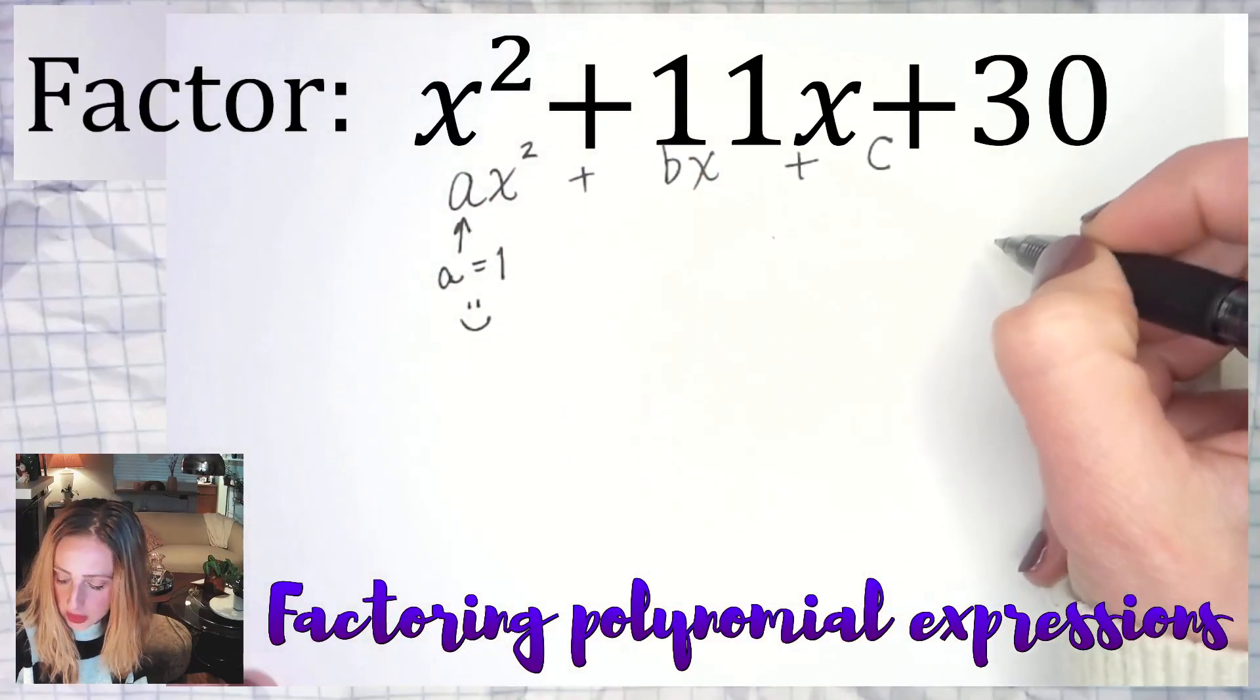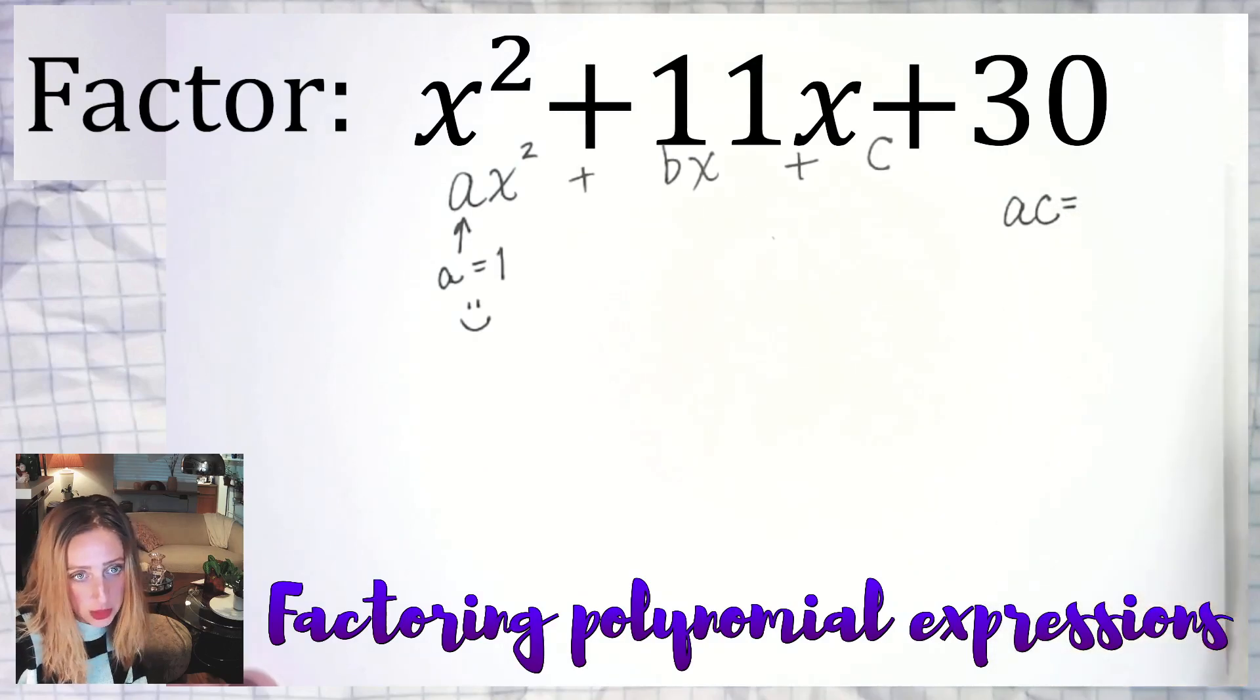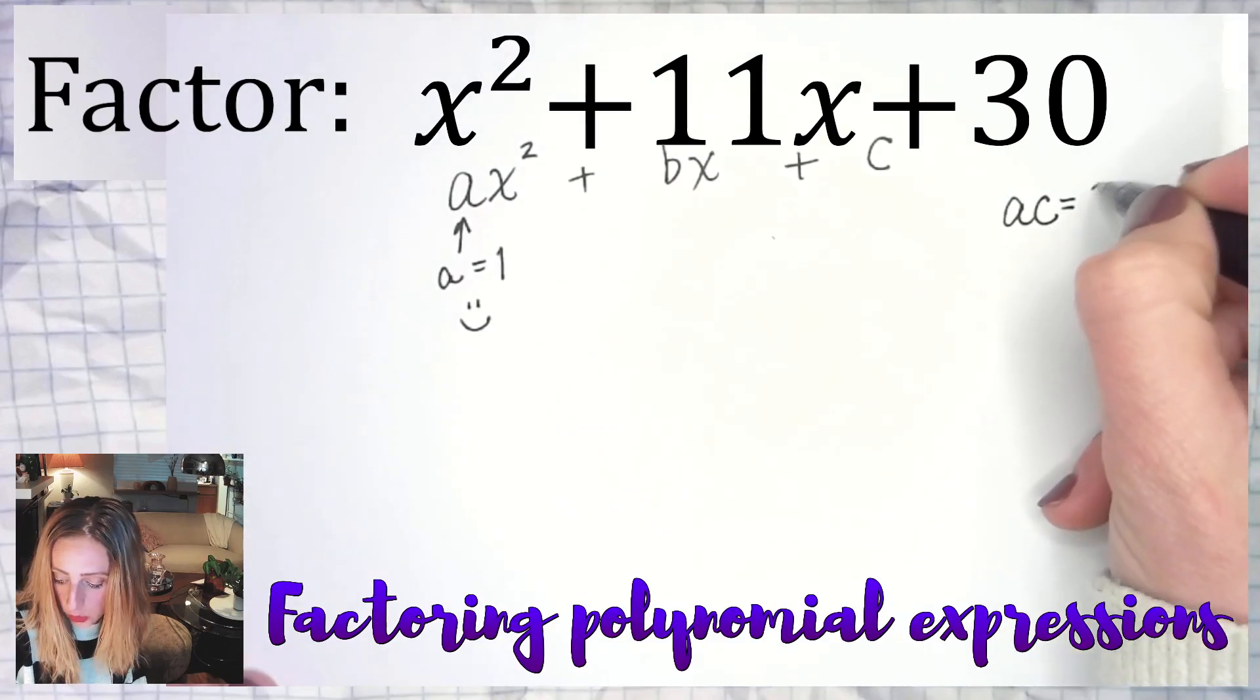So if we're going to do this, we could do a little bit of our ac method, which means you're multiplying a and c, which will give us 30.